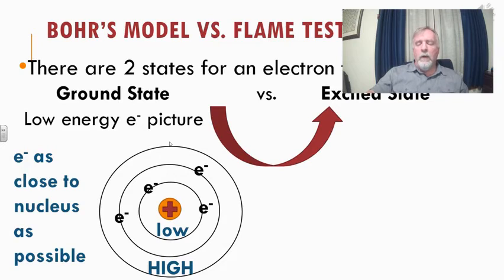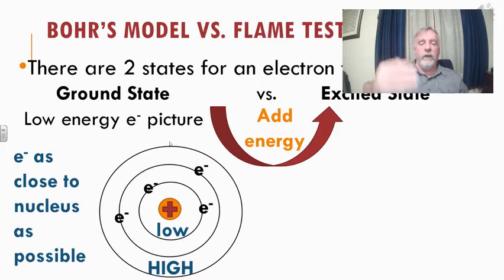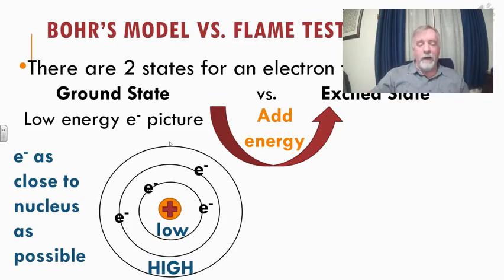The ground state means all electrons are as close to the nucleus as possible, in the smallest rings they can get. An excited state is when we add energy to an electron — we hit it with a photon, a beam of light, or we heat it in a flame — and we kick that electron up a level. It's like going up stairs at a football stadium. The higher up you are, the more energy you have: you can jump off two steps and be fine, but jumping from two stories up is going to hurt.